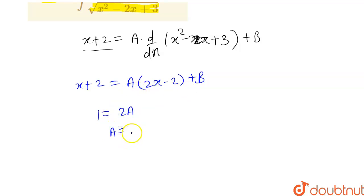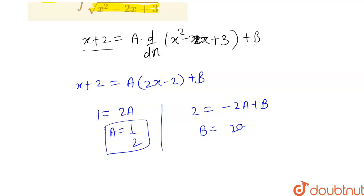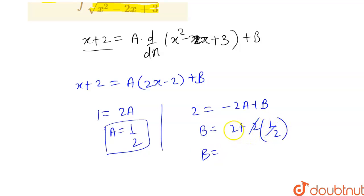So we get the value of a as 1/2. Now let's compare the constant terms. On the left hand side we have the constant as 2, and on the right hand side we have the constant as minus 2a plus b. So we get b equals 2 plus 2a. The value of a is 1/2, so 2a equals 1, and 2 plus 1 equals 3. So the value of b is 3.